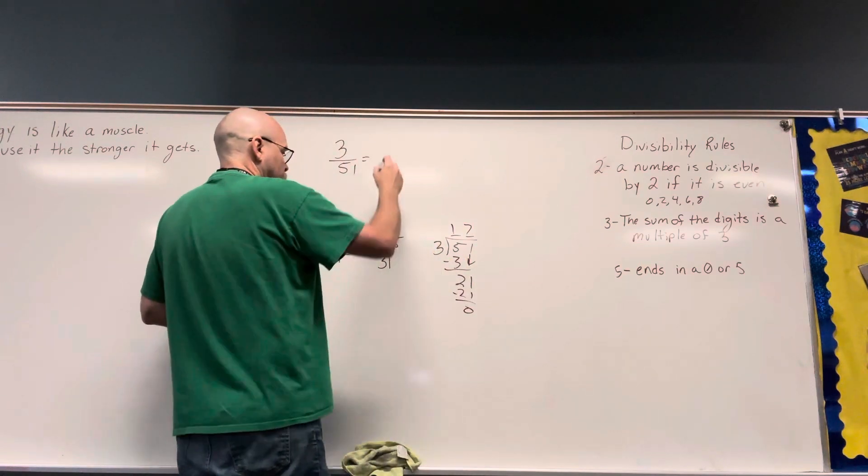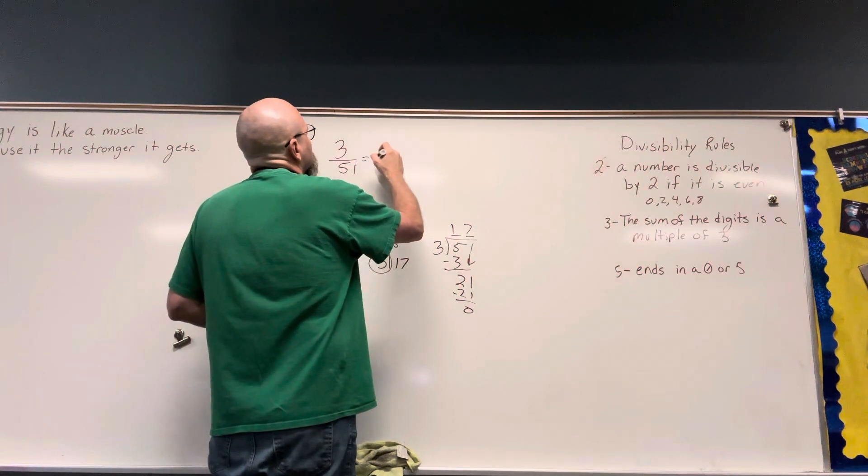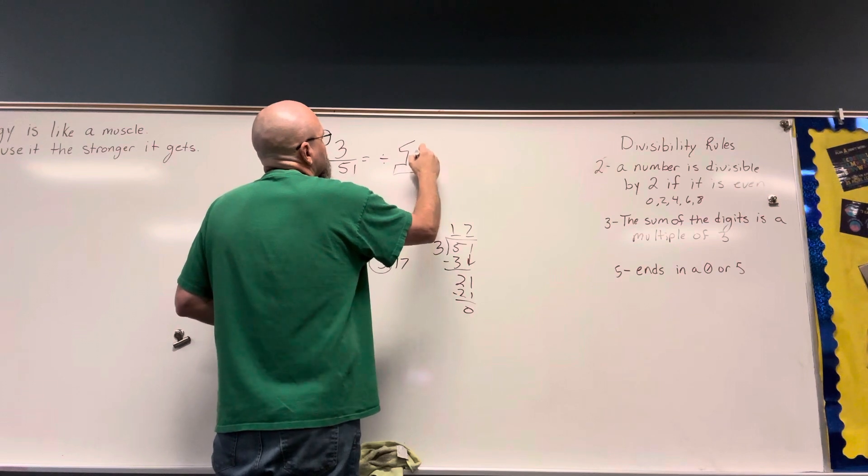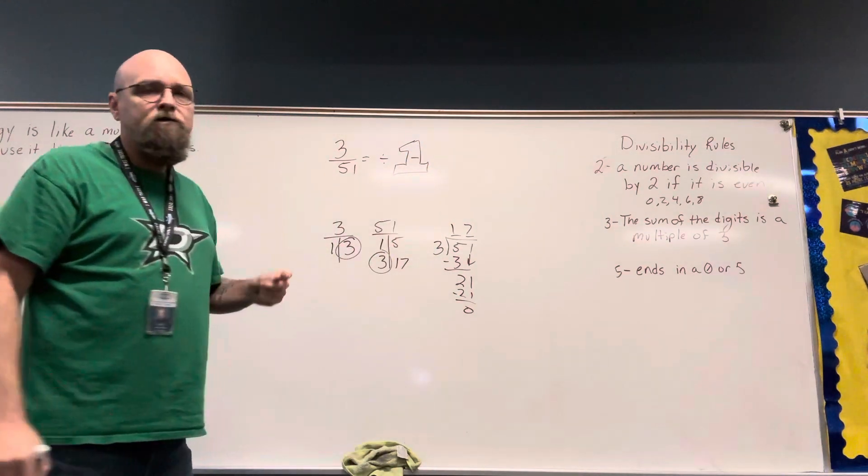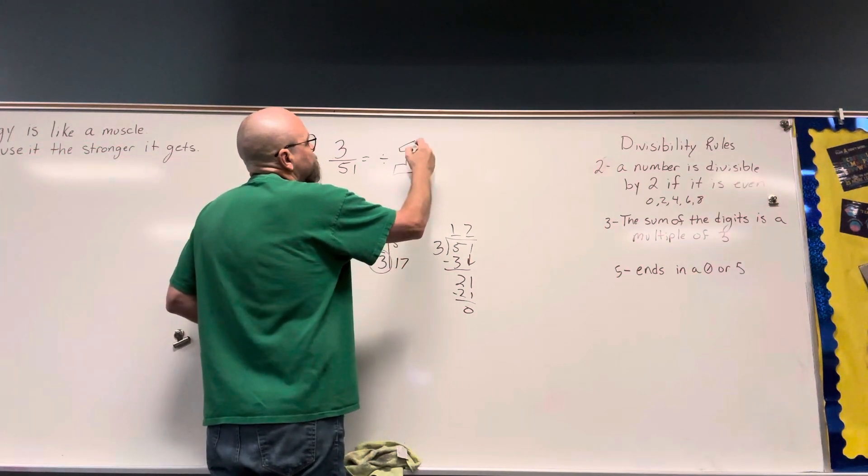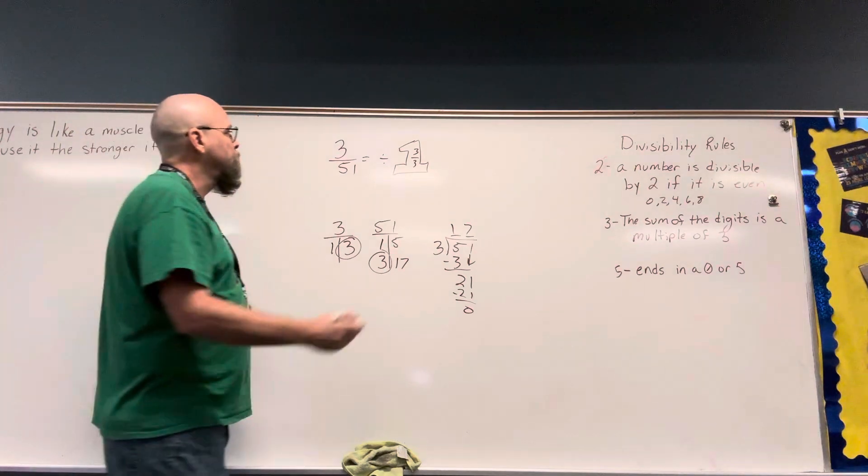So I'm going to divide both of these by 3, dividing by a fraction that equals 1, because when I divide something by 1, by a fraction that has the same numerator and denominator equals 1, and if I divide by 1, that doesn't change the value.